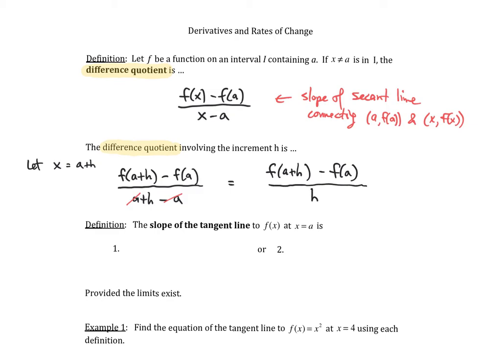Both of these things correspond to a difference quotient and both correspond to the slope of the secant line. In this case, remember my x was just equal to a plus h.